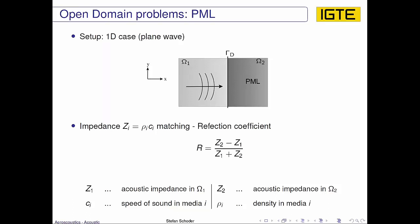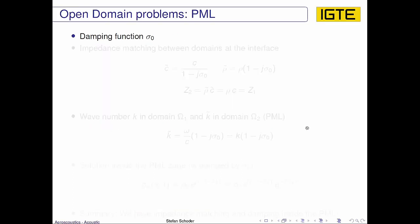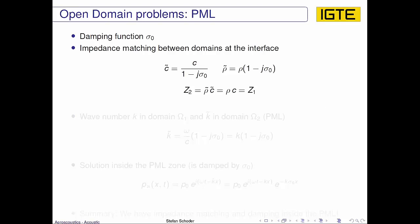And the thing is now, how can we satisfy that the impedance matches although we are introducing a damping function in Ω2, which in some sense would be counterproductive according to satisfying impedance matching. But we will see in a minute that this works. So we are introducing a damping function in Ω2. The damping function itself is nothing complicated. We already satisfied that we match the goal as we had on the first slide. And now what we would like to have is impedance matching between the two domains at the interface.